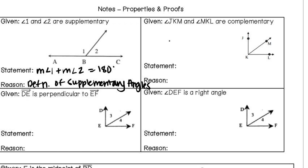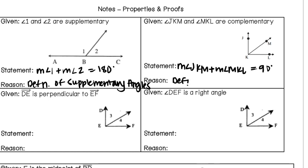In our second example, angle JKM and angle MKL are complementary. So we would know that the measure of angle JKM plus the measure of angle MKL should equal 90 degrees. That's because of our definition of complementary — very similar to our first example. Complementary angles have to add up to 90 degrees, so we're relying on that definition to write the statement.